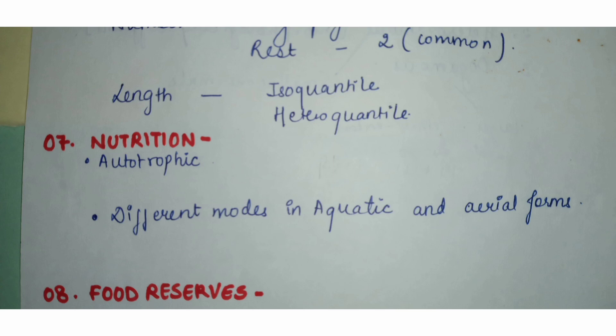Regarding nutrition, the presence of numerous pigments indicates that algae are photosynthetic. This autotrophic mode of nutrition is the primary mode. However, a few algae derive nutrition from other plants or engulf solid particles — that mode of nutrition is called heterotrophic.